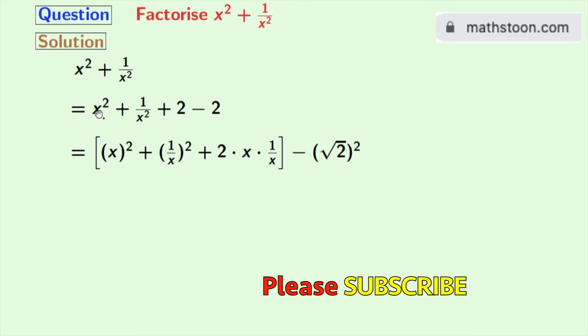We will rewrite x-square as x-square, 1 by x-square as 1 by x-square and 2 as 2 times x times 1 by x. Look that x gets cancelled and we are left with 2. And we will rewrite 2 as root over 2 whole square.